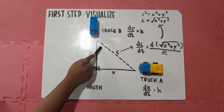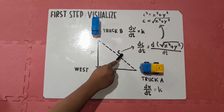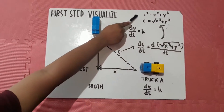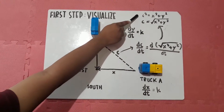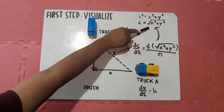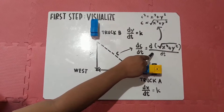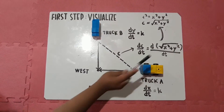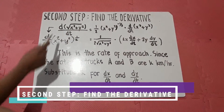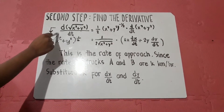This line here is the rate of approach between the two trucks. The rate of approach is letter C, dc over dt. Where does C come from? C comes from the Pythagorean theorem. To find the value of C, we take the square root of x-squared plus y-squared. So, dc over dt is the derivative of the quantity x-squared plus y-squared over dt. For the second step, we need to find the derivative of the square root of x-squared plus y-squared with respect to t, and we need to use the chain rule.